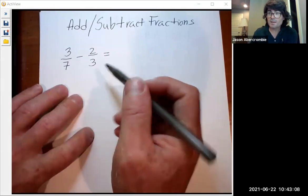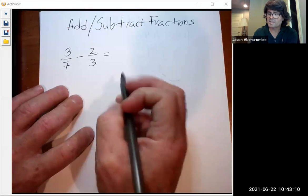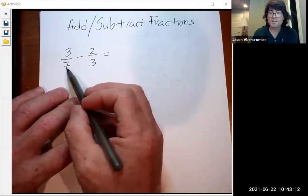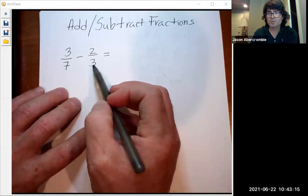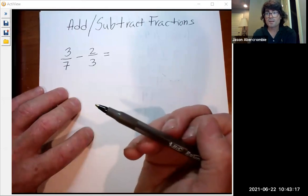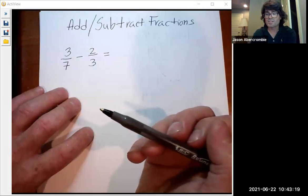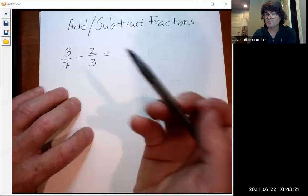So an easy way to find a common denominator is to just think about what number seven and three could both go into. And I'm thinking about 21. And sometimes if you're not sure, a good way to figure it out is to just say what's three times seven, that's 21.